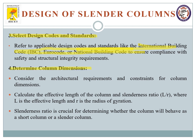The next part is determining column dimensions. We have to determine the dimensions for our column, considering the architectural requirements and constraints. We also need to calculate the effective length of the column and the slenderness ratio, where L is the effective length and R is the radius of gyration. Calculating the effective length is the most important part in determining the column dimension.